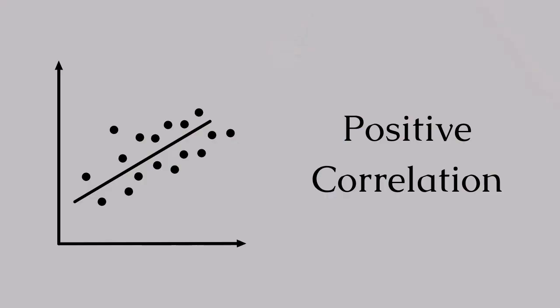First, positive correlation. As one variable increases, the other also increases. Think of height and shoe size — tall people usually have bigger feet than short people. Height and shoe size are positively correlated.